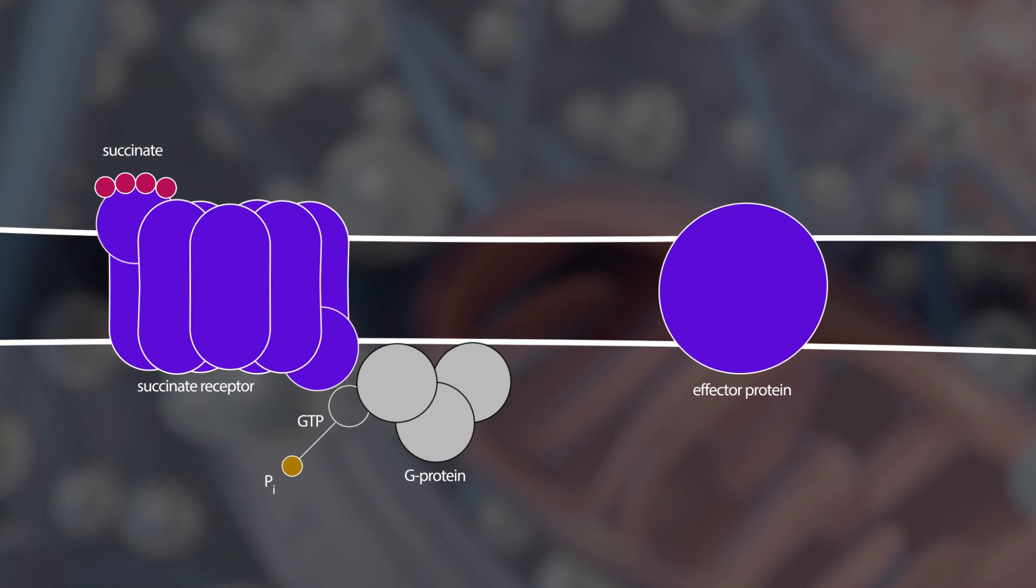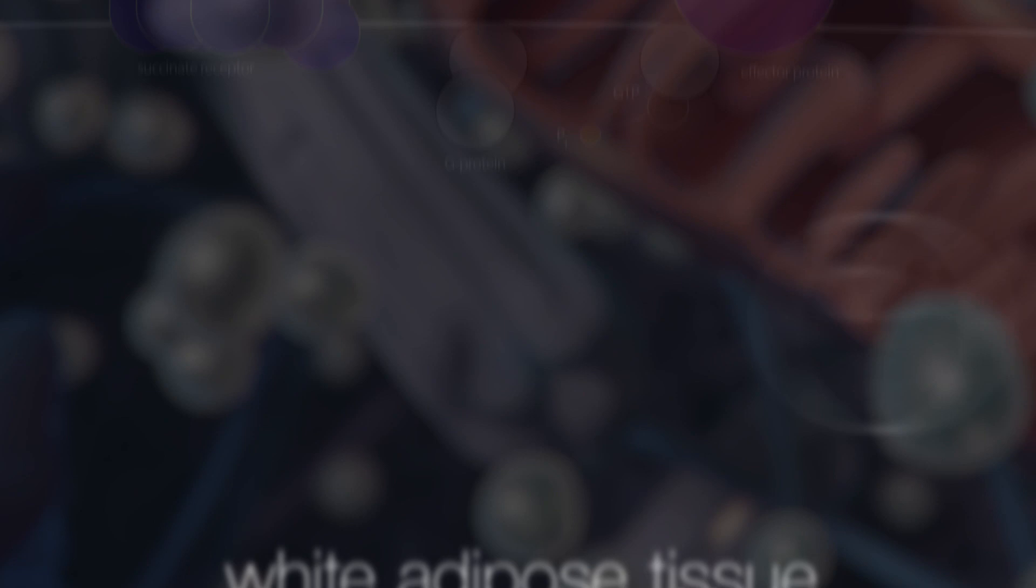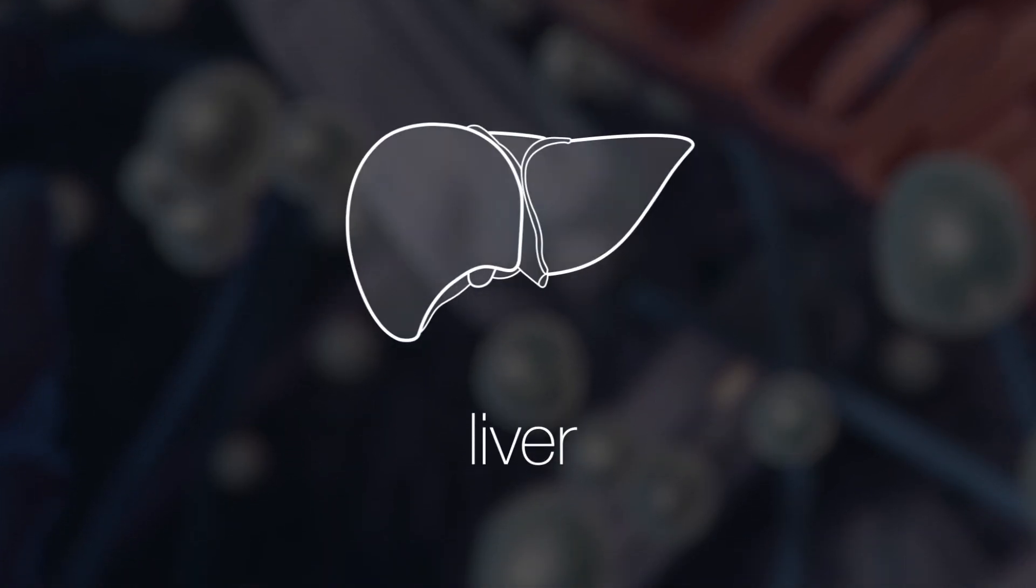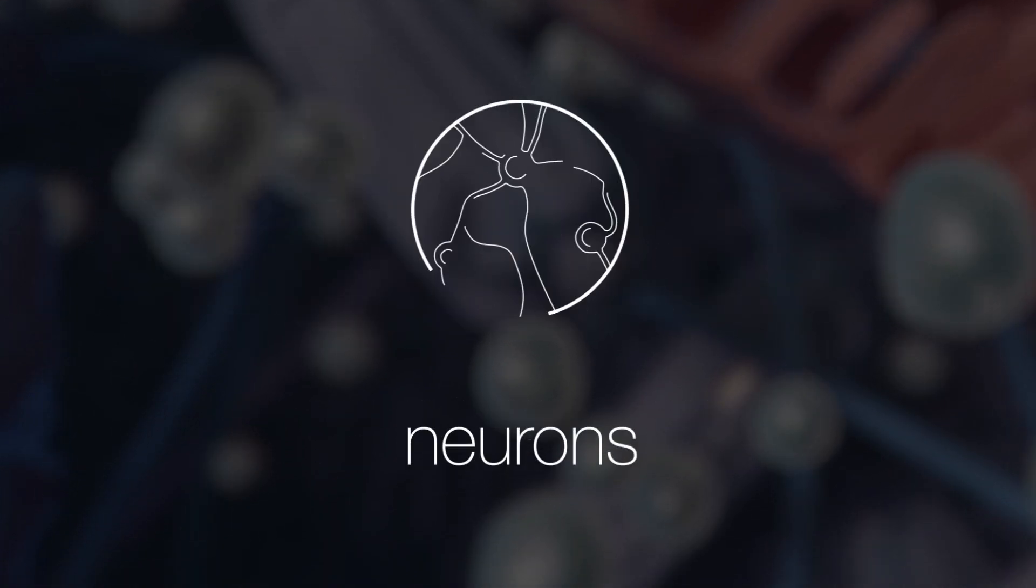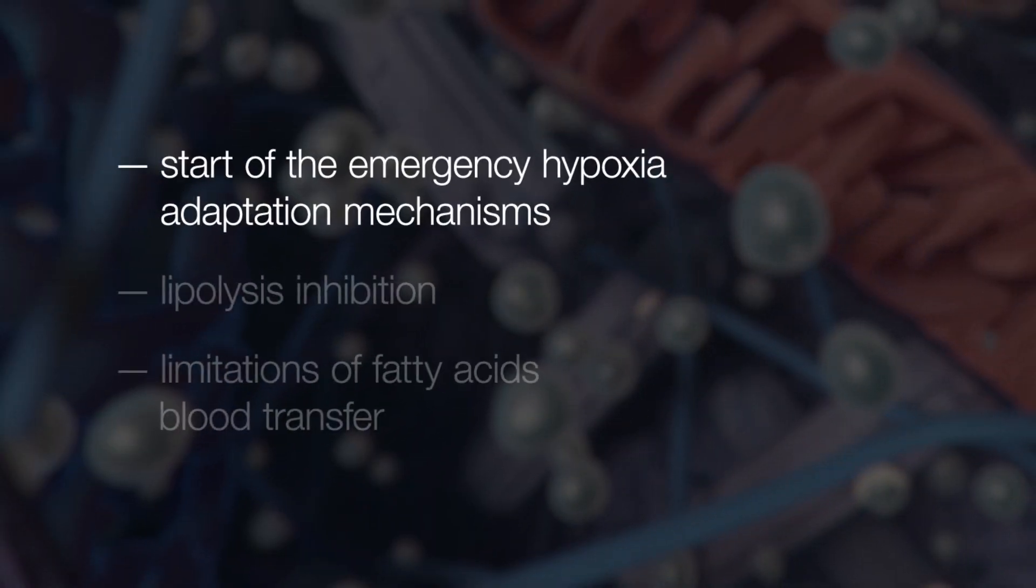Besides the metabolic, succinate also has a receptor function. Succinate receptors are activated in white adipose tissue, multiple inner organs, neurons and immune cells. Succinate triggers mechanisms of adaptation to hypoxia and inhibits lipolysis by limiting the movement of fatty acids in the blood.